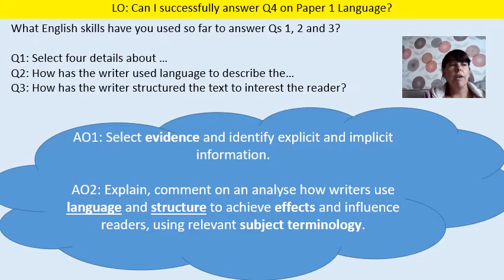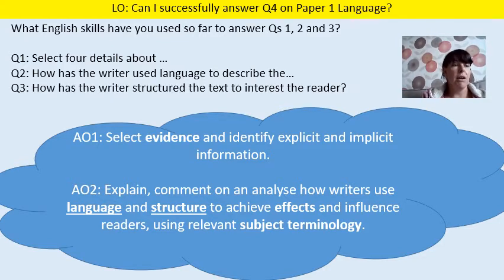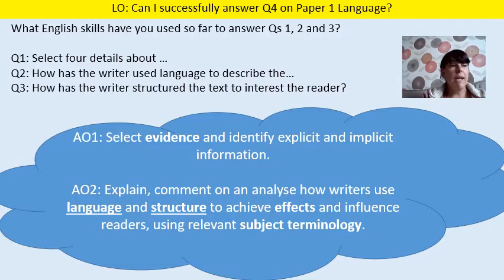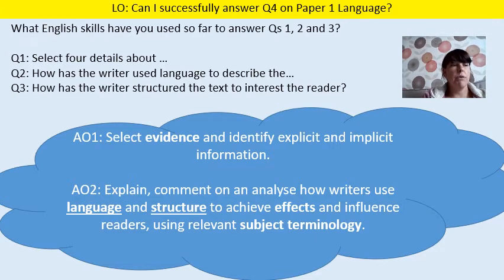For question 2, you've had to use a combination of AO1 and AO2, so you've got your evidence, but here you've also had to explain the language. AO2 is: explain, comment on and analyse how writers use language to achieve effects and influence the reader using the relevant subject terminology. So you've got your quotes, you've explained the effect of them and you've tried to identify some language devices as well, like verb or simile or personification. Question 3 is looking at AO1 — selecting evidence — and AO2, but specifically structure and effect.